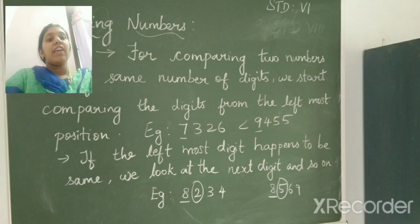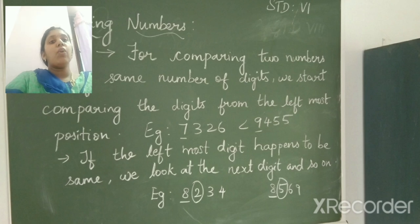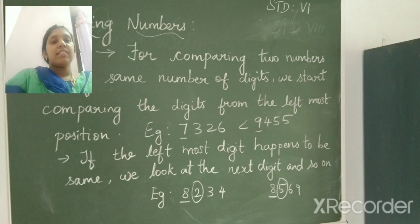Next condition is if the left most digit happens to be same, we look at the next digit and so on. On the left most position, if that digit is also same, then we move on to the next digit and so on. Look at the example 8,234 and 8,569.